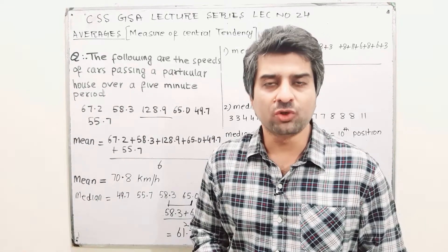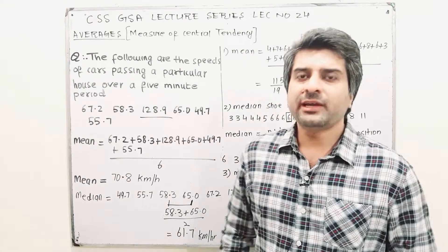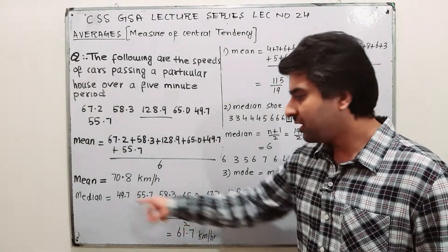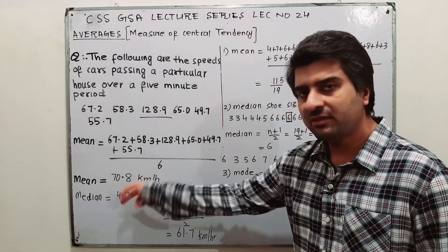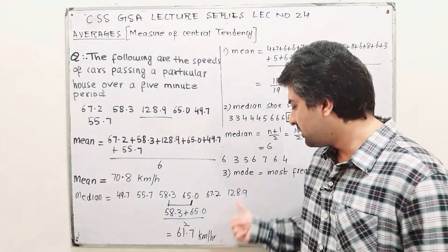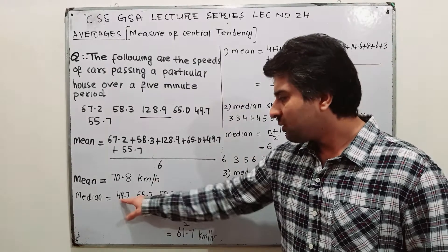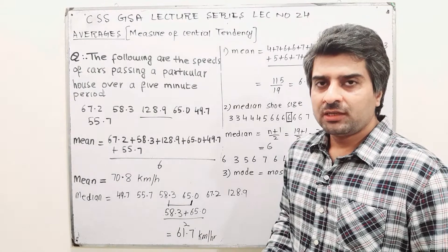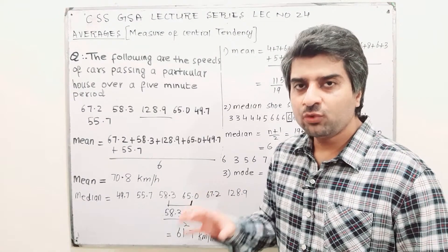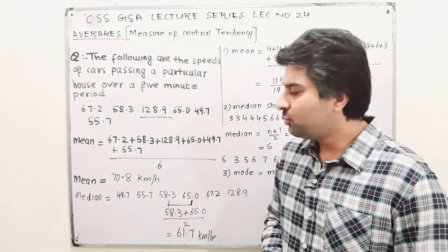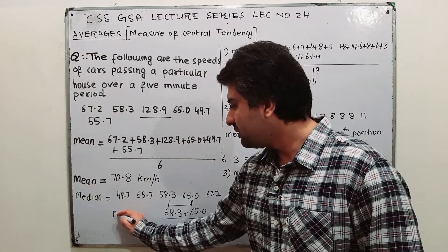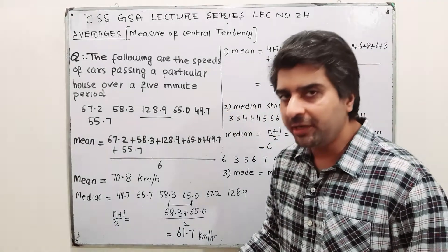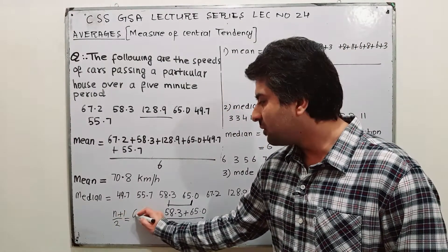Instead, calculate the median. Arrange values in ascending order: 49.7 is the smallest, largest at the end. The number of values is 6, which is even. Use the formula (n + 1) / 2 to find the position of the median. With n = 6: (6 + 1) / 2 = 7 / 2 = 3.5.